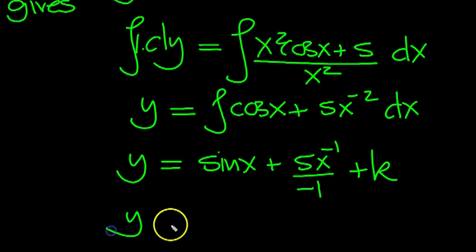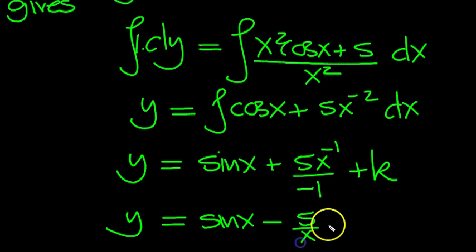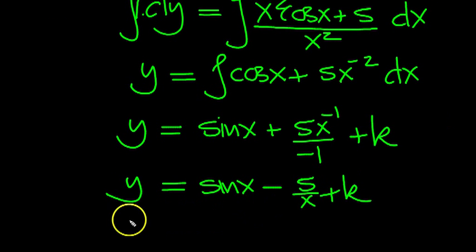So let's tidy that up then. So y equals sine x. The minus and the plus, the minus can come up to be a minus, 5 over x plus k. There we go. Y equals sine x minus 5 over x plus k.